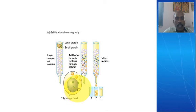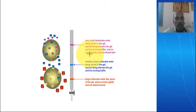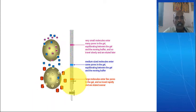The particles will enter into the gel particles. Small particles are able to enter, but large particles are not able to enter into the gel. The column is filled with gel beads — these beads are gel beads that contain pores. They act as the molecular sieve.